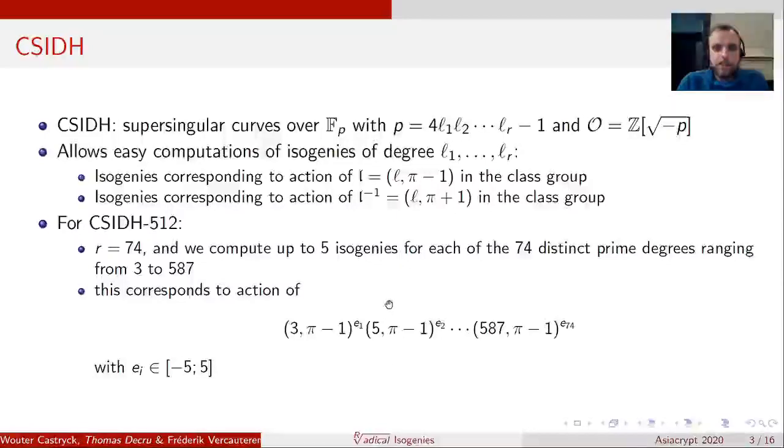Now in the CSIDH setting, we use supersingular elliptic curves over the prime field F_p, where p has a very specific form, more precisely it's four times a bunch of small primes minus one, and furthermore all the elliptic curves have this endomorphism ring. One of the reasons we use this setting is that it allows the easy computation of isogenies of degree L_1 up until L_r. More precisely, every prime L_i has two easy-to-compute isogenies corresponding to the action of a specific ideal in the class group.